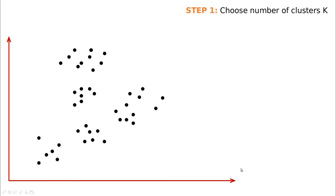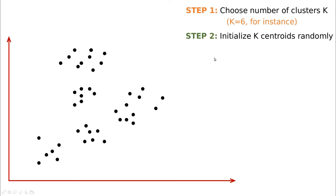We're going to start by choosing the number of clusters. Imagine we say k equals 6. We're going to initialize k centroids randomly — by 'centroids' I mean choose just k observations from the dataset. So drop six random points into this collection and tag them as the initial centroids of the cluster.